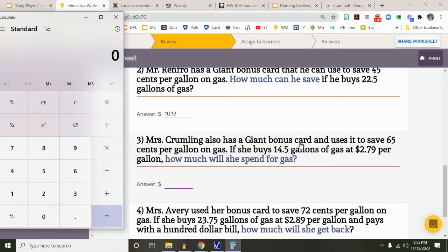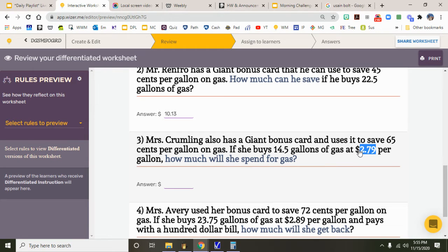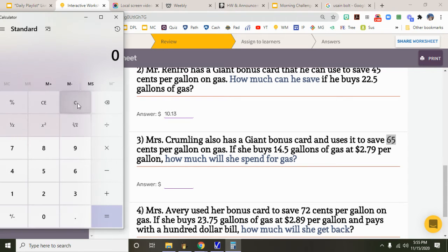Mrs. Crumley also has a giant bonus card and uses it to save 65 cents per gallon on gas. If she buys 14.5 gallons of gas at this price per gallon, how much will she spend for gas? Well, you got to visualize Mrs. Crumley coming into the gas station and it says this on the pump, but she's gonna save 65 cents off that. So the first thing you have to do is take the price of gas and minus 65 cents.